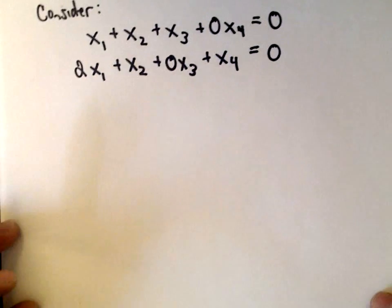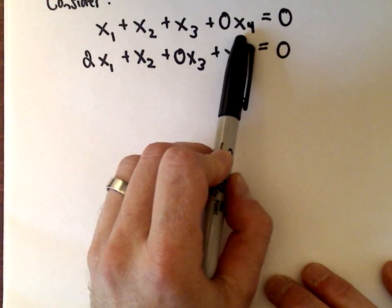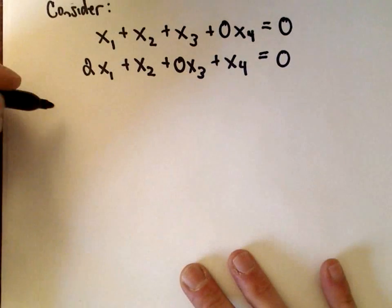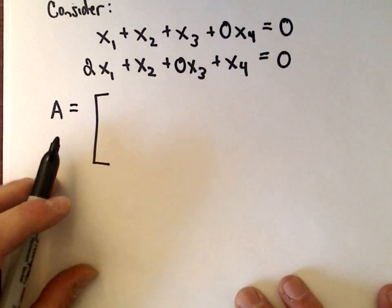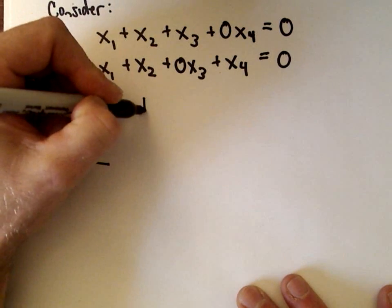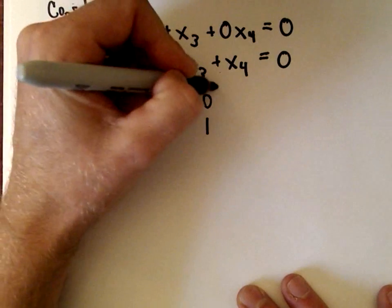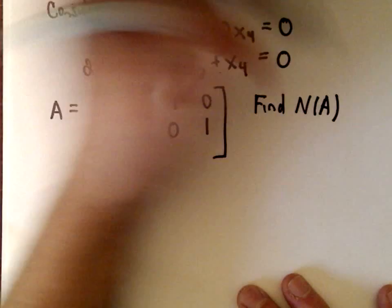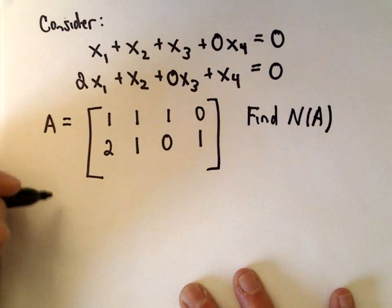Let's look at a quick example. Suppose we've got this system: x1 plus x2 plus x3 plus 0·x4 equals 0, and 2x1 plus x2 plus x3 plus x4 equals 0. Let's find the null space. Our matrix A is just the coefficients: 1, 1, 1, 0 in the first row, and 2, 1, 0, 1 in the second row. To find the null space, we use row reduction.